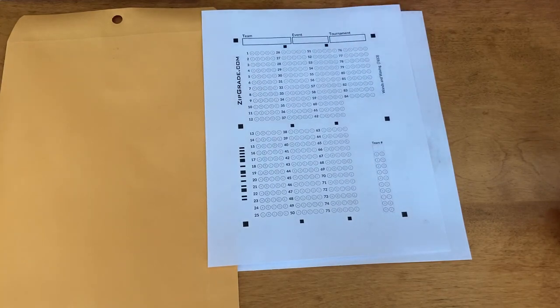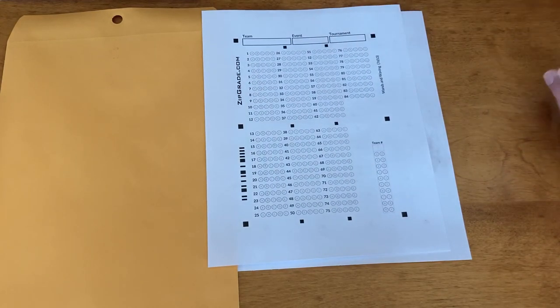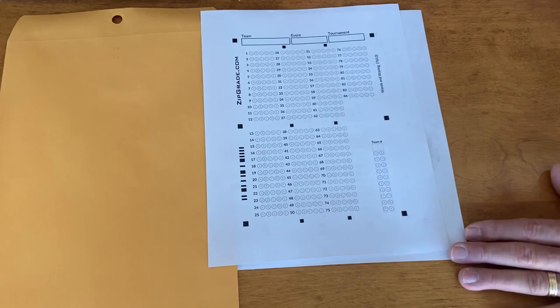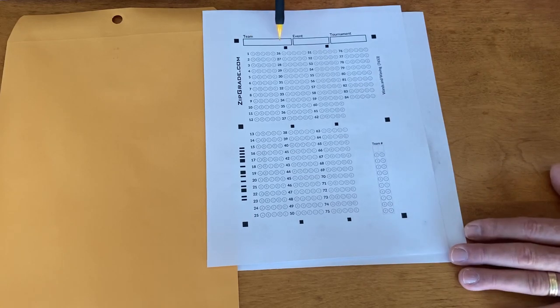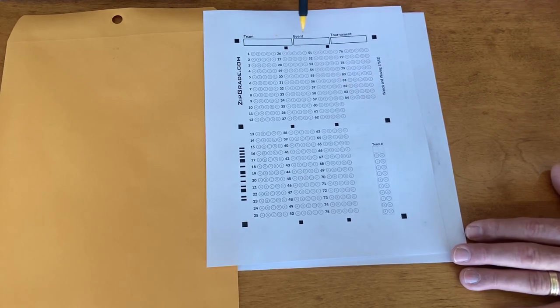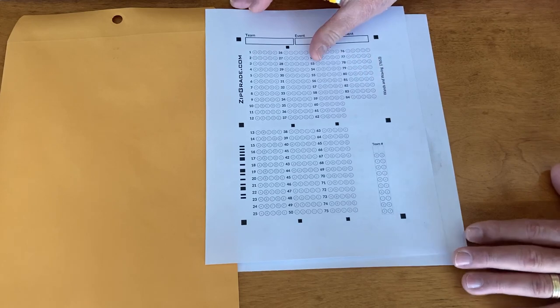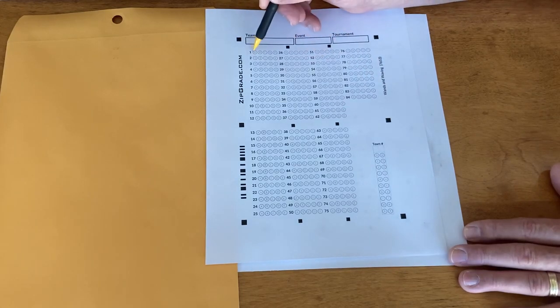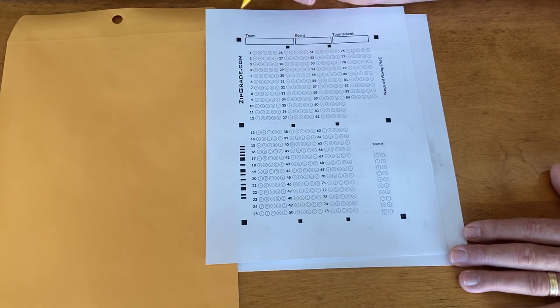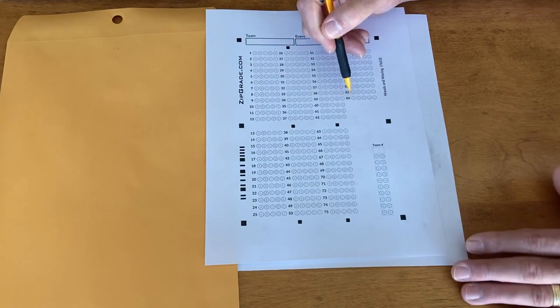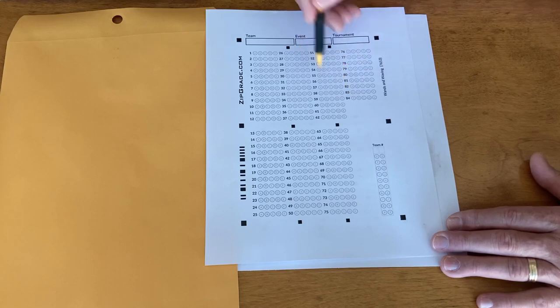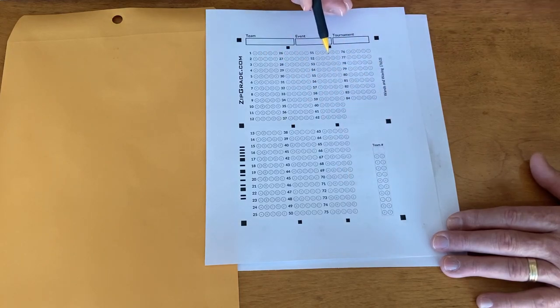If you go to our website and print off a zip grade form, this is what you'll get. There are blanks on here that are not filled out in terms of the team name, event name, tournament name, and team number. The questions that your students are going to be filling out start here with number one, number two, number three, number four, all on this form. It happens to go to 84.